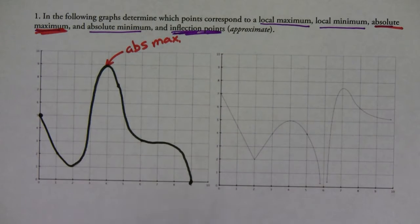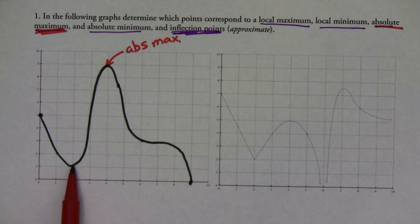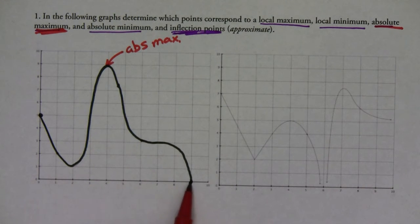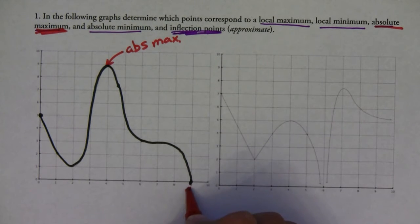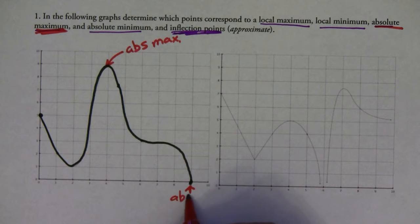For the absolute minimum, you have to be careful — it's not right here at this hump. The lowest value of the graph is this endpoint right here, so this is going to be the absolute minimum.